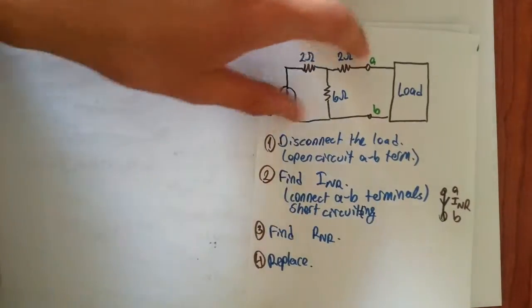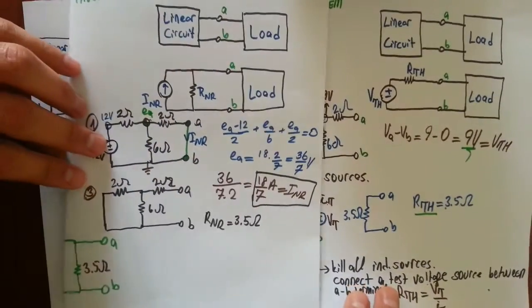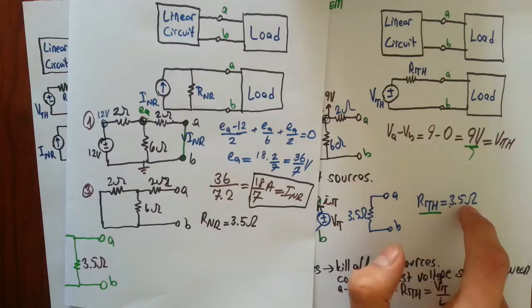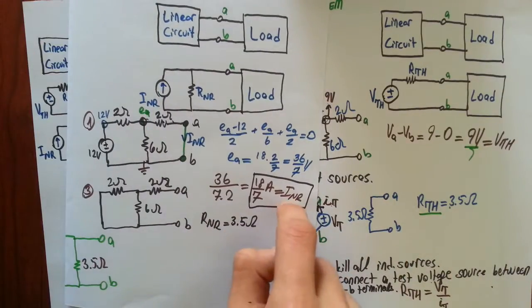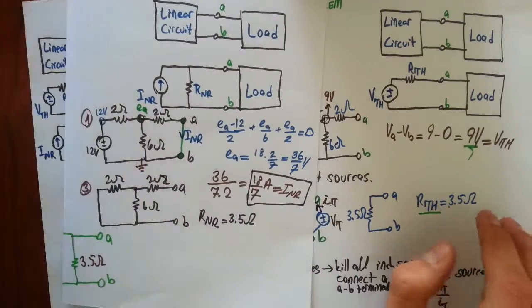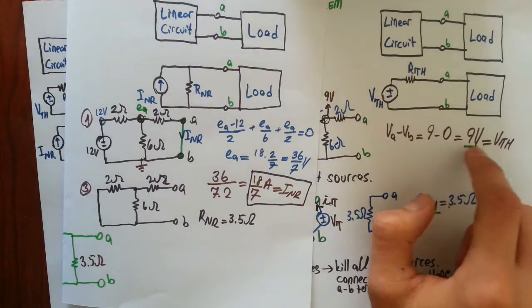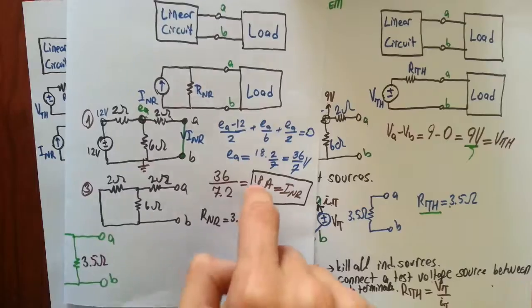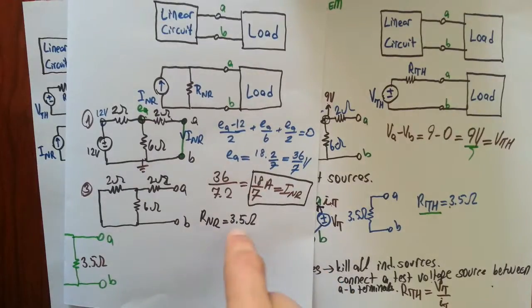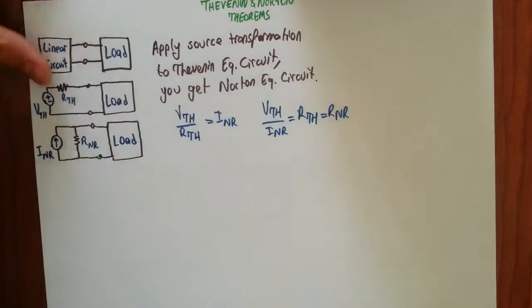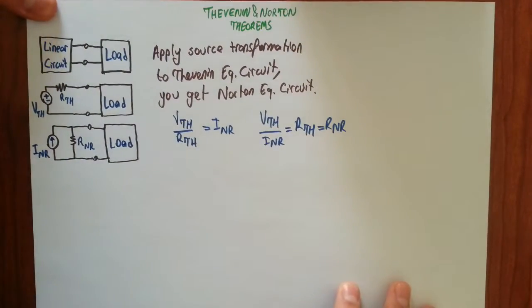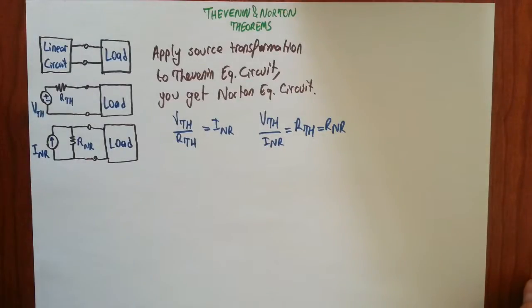And a last example. Remember this circuit — we have also simplified it into Thevenin and Norton equivalents. We found R_Thevenin as 3.5 ohms and R_Norton as 3.5 ohms. We found the Norton current as 18/7 amps, and the Thevenin voltage as 9 volts. If you divide 9 volts by 18/7 amps, you find 3.5 ohms, which is the equivalent resistance between terminals A and B. So we have seen that these formulas are really true.